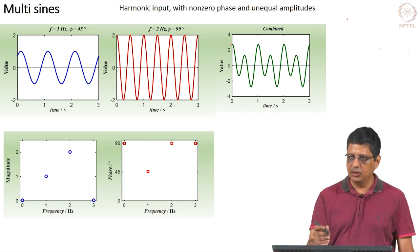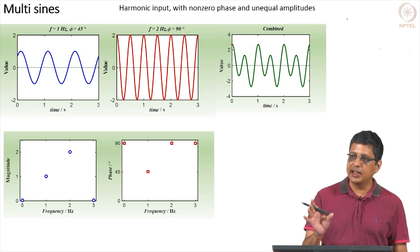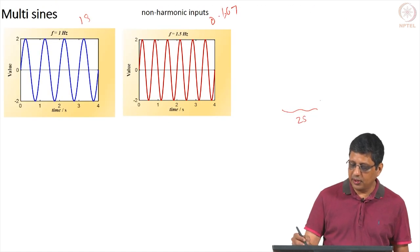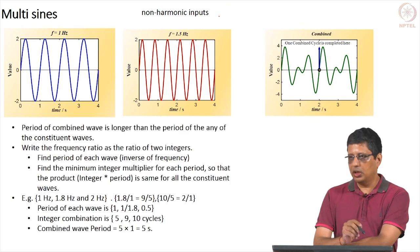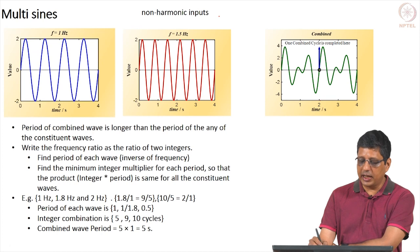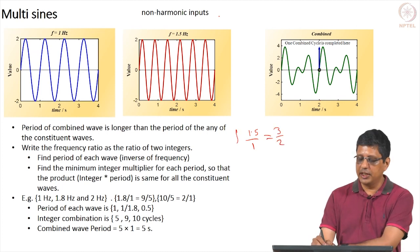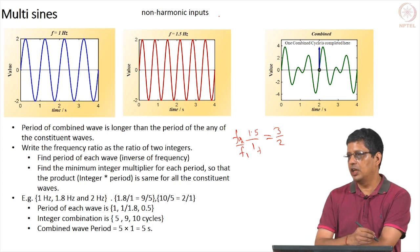So the period of the combined wave, which is 2 seconds here, is longer than the individual periods. With harmonic waves, you can take the combined data still in 1 second — the base frequency period limits the time and no remaining waves add extra time. When you have non-harmonics, you will need longer time than just the base. To calculate the total period, write the frequency ratio — 1.5/1 = 3/2 — as a ratio of two integers.